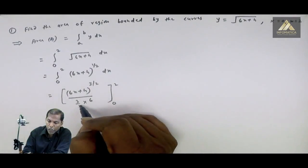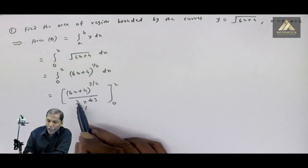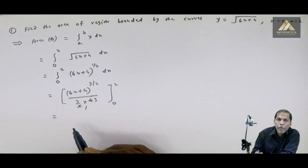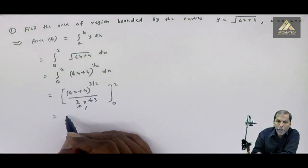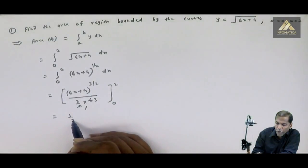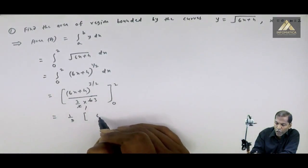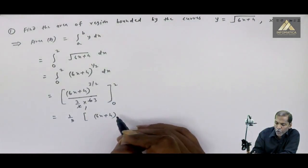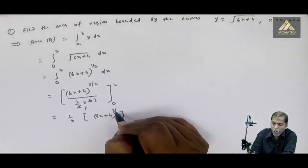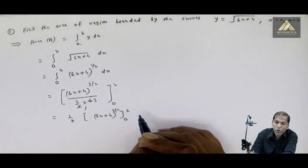यहाँ पर observe किया है: 2 और 2 cancellation हो रहा है, then 3 into 3 = 9, जो constant term है. उसे हम square bracket से बाहर ले सकते हैं. 9 common from the limit, तो हमें मिला 1 upon 9. Bracket में रहेगा (6x plus 4) raised to 3/2, with limit 0 to 2.